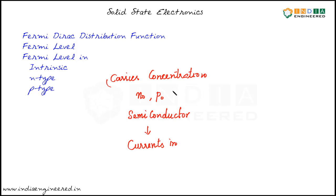In order to derive carrier concentration, we need to understand Fermi-Dirac distribution function and Fermi levels. They play an important role in analysis of semiconductor devices. Once we have understood what is Fermi level and Fermi-Dirac distribution function, we can discuss about Fermi levels in intrinsic, N-type, as well as P-type semiconductors.